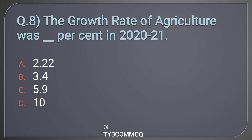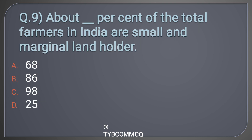Option A: 2.22, Option B: 3.4, Option C: 5.9, Option D: 10. The correct answer is Option B: 3.4 percent.